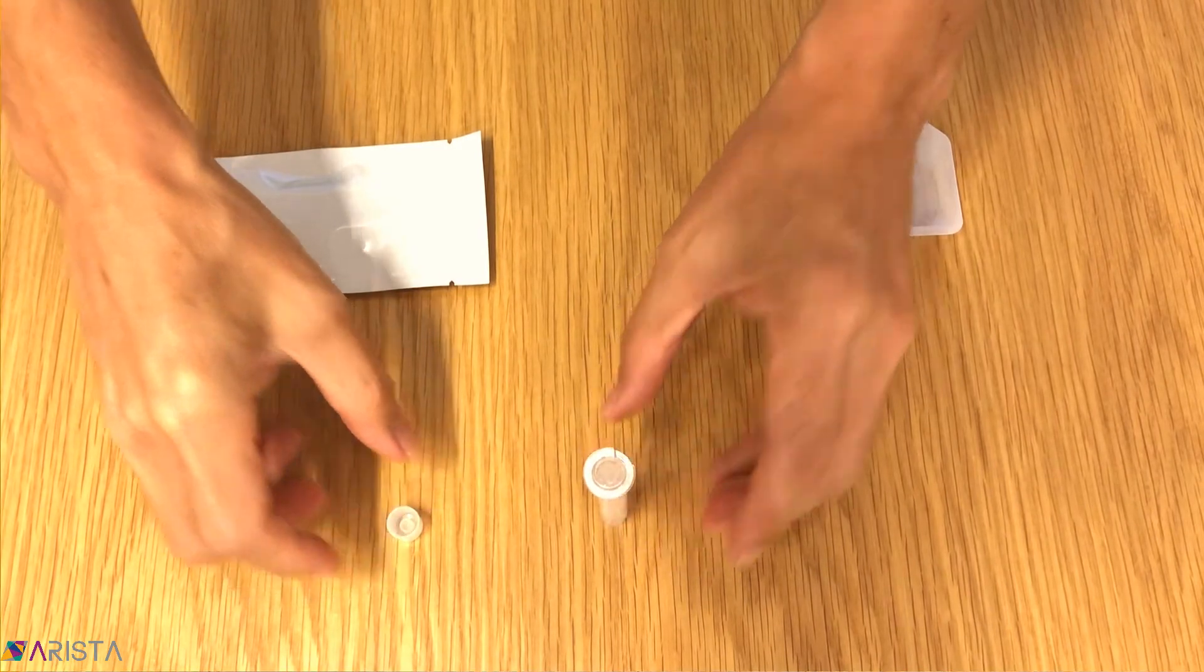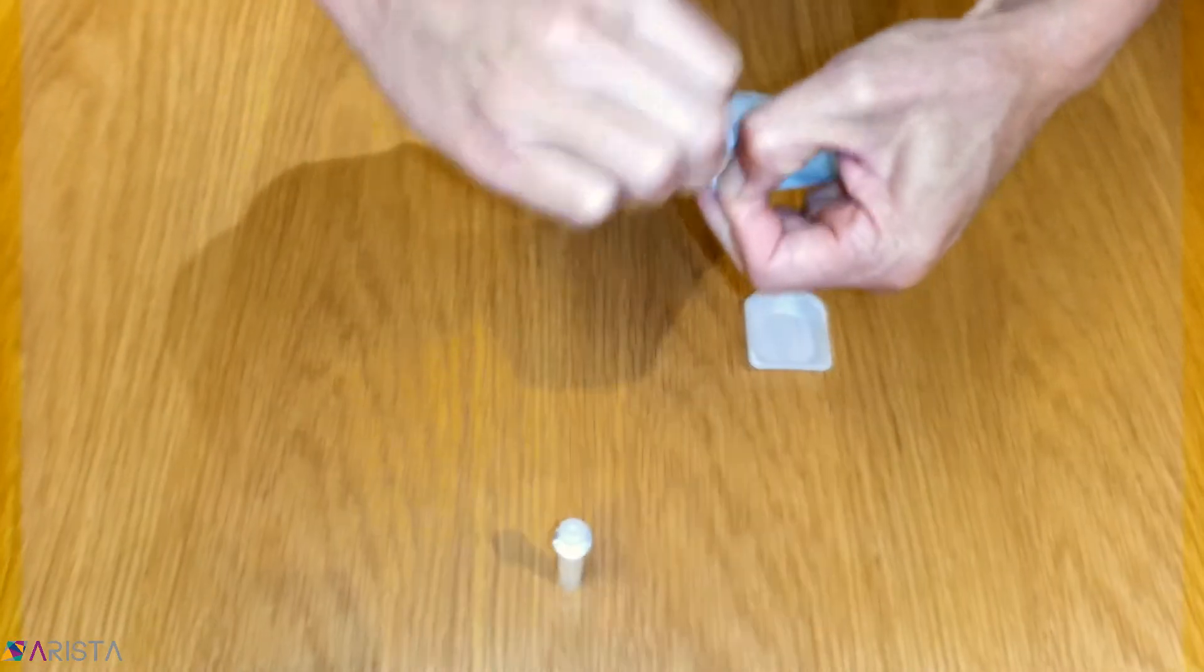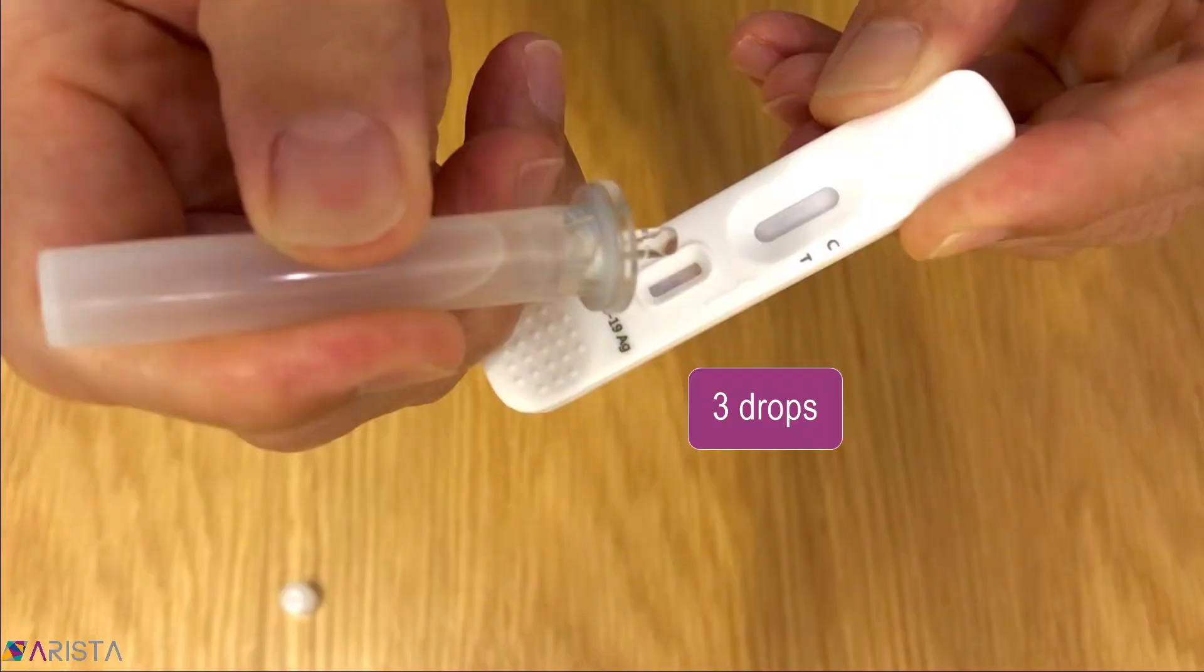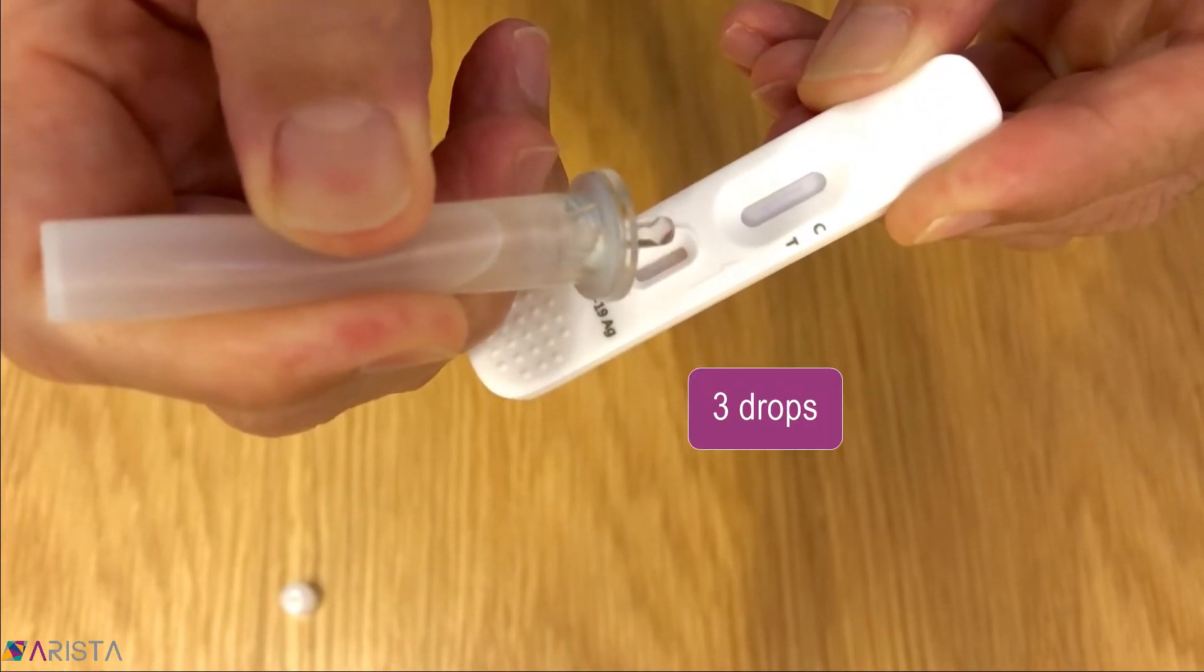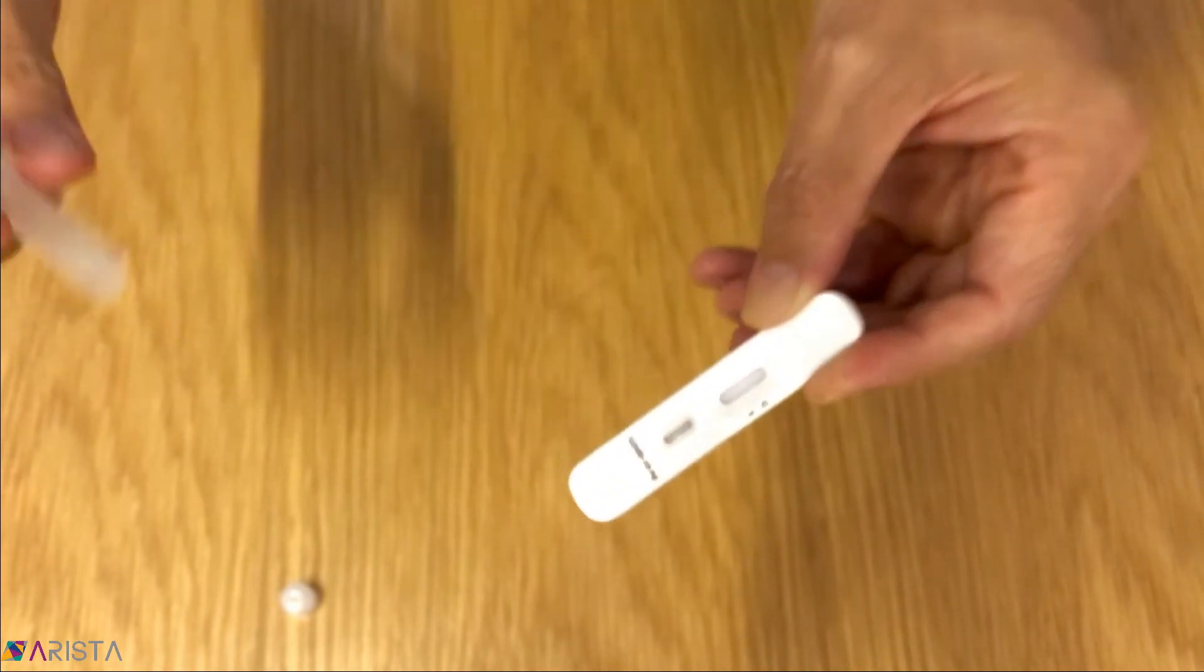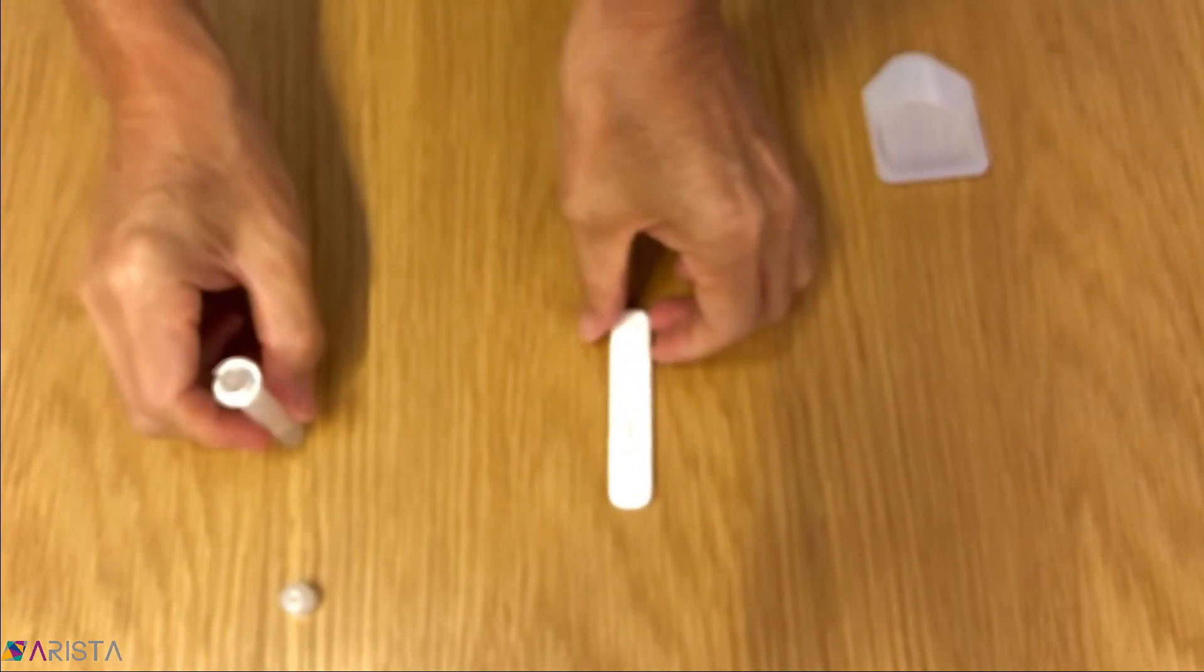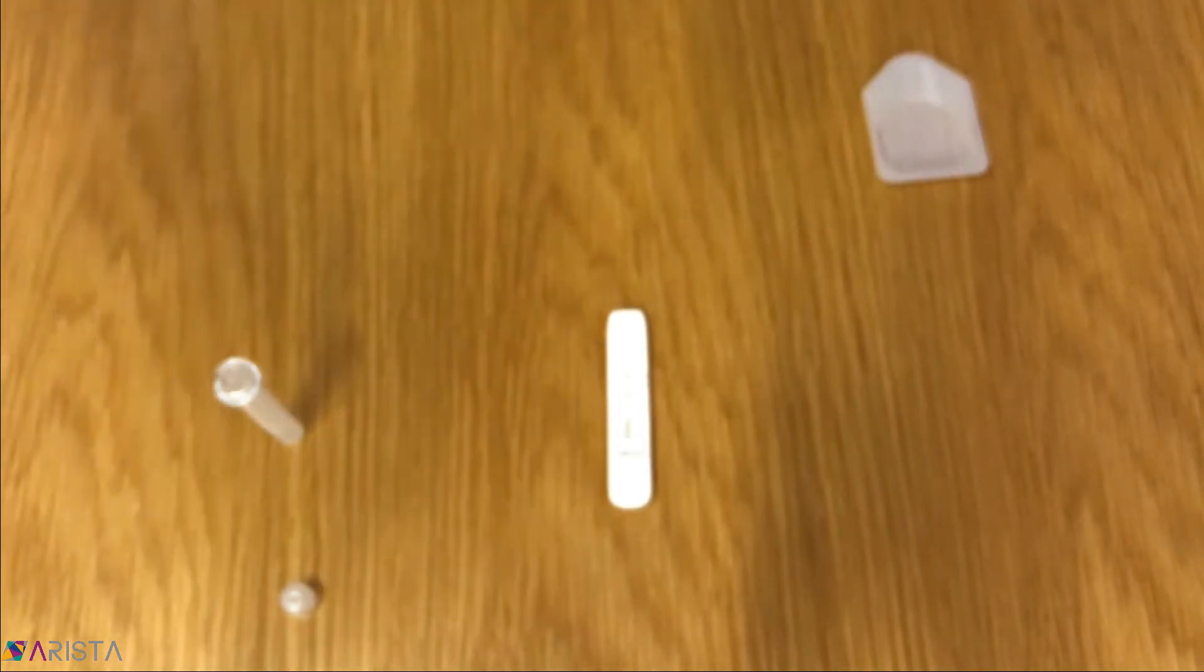Remove the test cassette from its foil pack if you have not previously done so. Invert the tube and squeeze three drops into the small sample well at the bottom end of the test cassette. You may continue the test even if you accidentally added four drops.